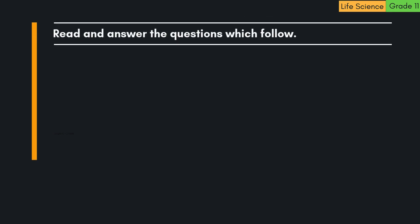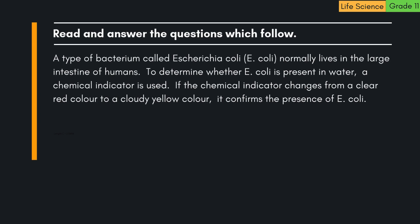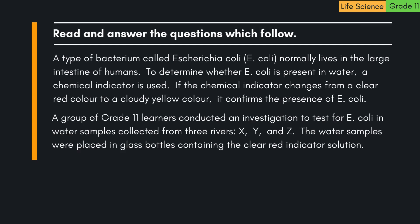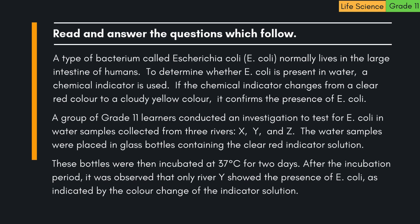Read and answer the questions which follow. A type of bacterium called Escherichia coli (E. coli) normally lives in the large intestine of humans. To determine whether E. coli is present in water, a chemical indicator is used. If the indicator changes from a clear red colour to a cloudy yellow colour, it confirms the presence of E. coli. A group of grade 11 learners conducted an investigation to test for E. coli in water samples collected from three rivers — X, Y, and Z — incubated at 37°C for two days. After the incubation period, only River Y showed the presence of E. coli, as indicated by the colour change of the indicator solution.